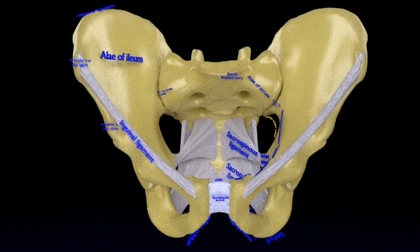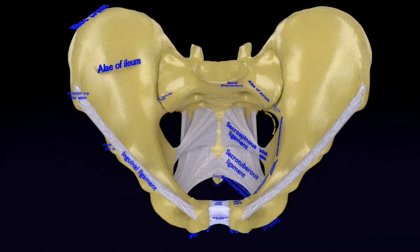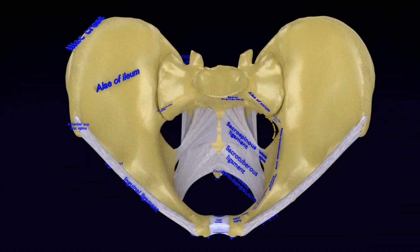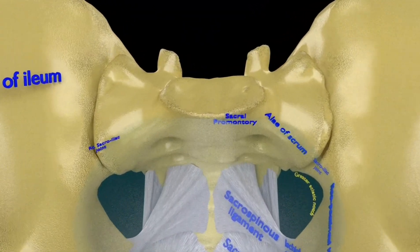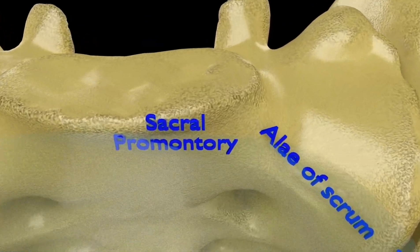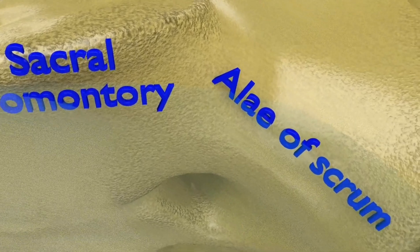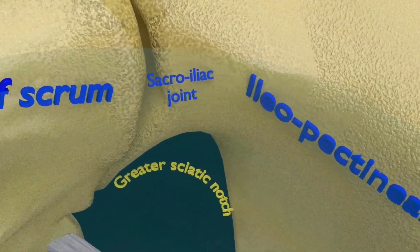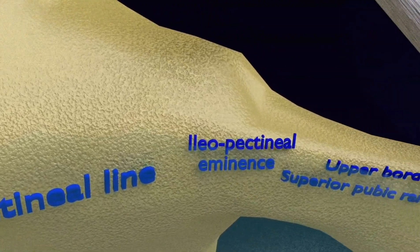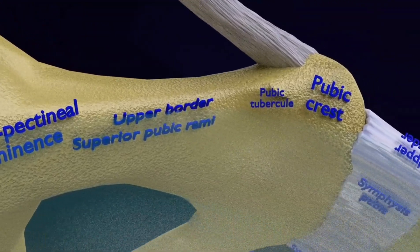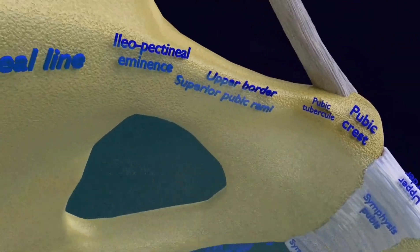The true pelvis is the bony canal through which the fetus has to pass during childbirth. Therefore, determination of the diameters of this canal is important to know the childbearing capacity of the mother. The true pelvis is composed of the inlet, the cavity, and the outlet. The boundary of the pelvic inlet is formed from back to front on each side by the sacral promontory, sacroiliac joints, iliopectineal lines, iliopectineal eminences, upper border of the superior pubic rami, pubic tubercles, pubic crests, and upper border of the symphysis pubis.